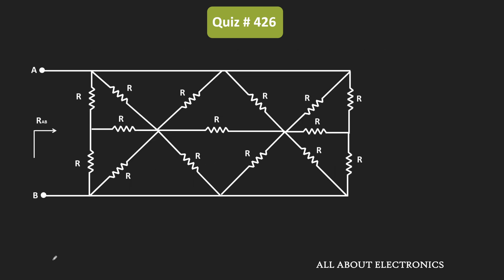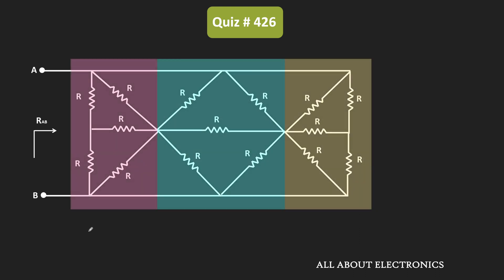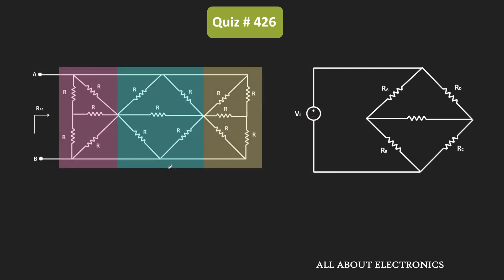At a first glance, this circuit seems a little bit complicated. But actually, it consists of three Wheatstone bridges. This is the first Wheatstone bridge, this is the second Wheatstone bridge, and this is the third Wheatstone bridge. If you see the center portion of the circuit, it clearly appears as a Wheatstone bridge, and similarly, the first and the third portions are also Wheatstone bridges.